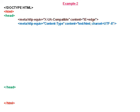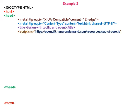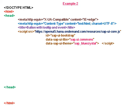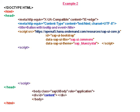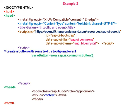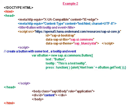In Example 2, we create a button with tooltip and event. The theme is Blue Crystal. We create a new button with text 'Button', a tooltip 'This is a test tooltip', and the event press — where we write a function so that when the user presses the button, they see an alert.